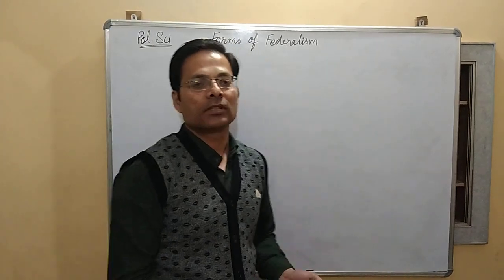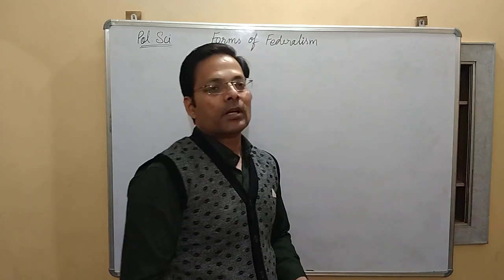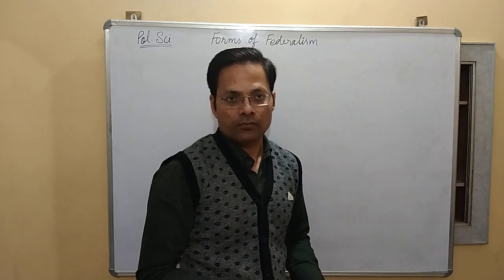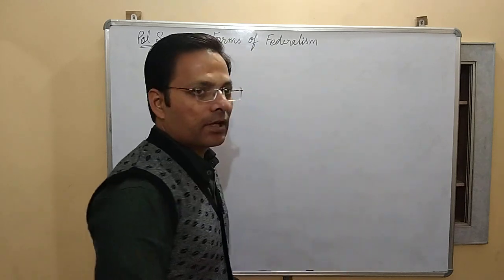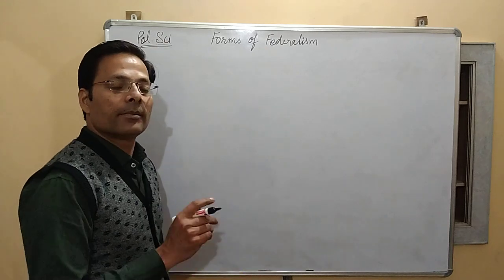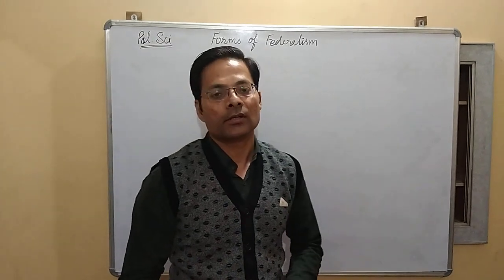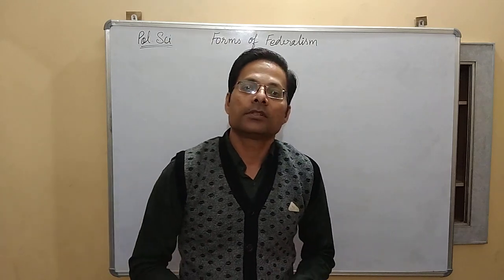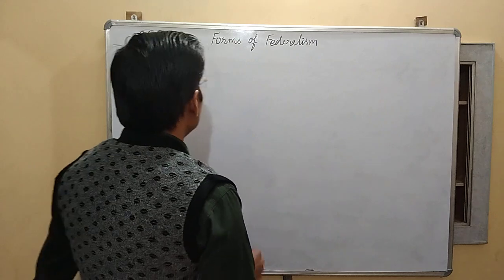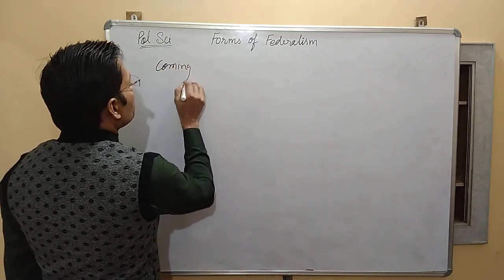Hello everyone, this is Vinod Kumar Singh and we are going to study forms of federalism. Two types of federalism are generally practiced in the world in modern democracies. One is coming together federation and the other is holding together federation. We are going to understand both, beginning with coming together federation.